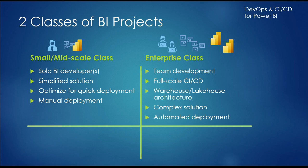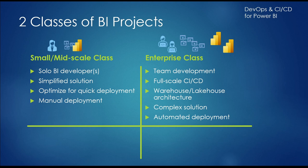Contrast this with an enterprise class project, where generally we want the ability for multiple developers to be involved in creating different objects within our queries, our data model, and our reports. We may not be doing that today, but we want to have that capability in the future. We want to implement full-scale continuous integration, continuous delivery. And our BI project may encompass developing or enhancing a data warehouse or data lake architecture. It's a more complex solution — bigger investment — but we get automated deployment and support for multiple developers. So it's important to understand the class of the project you're working on to apply the DevOps and CICD concepts I'm going to talk about.